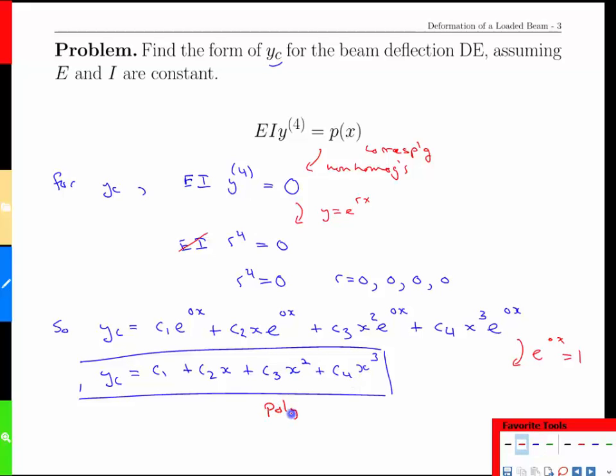So that means the shape of the beam as it deforms is going to be described perfectly, in this case here by a cubic polynomial, if there's no load on it. Now we have to go one step further and apply a load. We'll see that through an example. We'll see you next time.